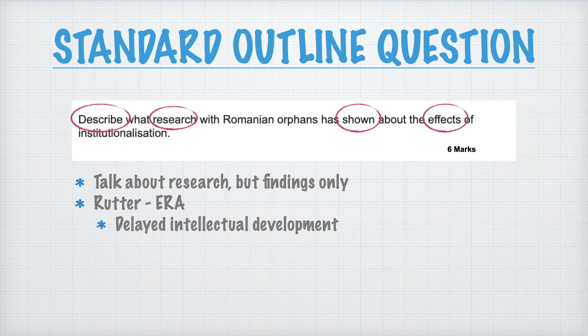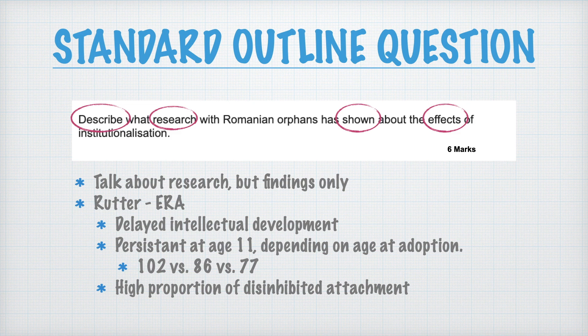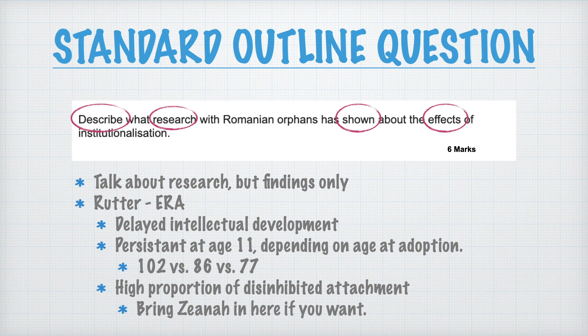There was delayed intellectual development which was persistent at age 11 depending on age at adoption. Those adopted before six months had a mean IQ of 102 versus those adopted after six months who had a mean IQ of 86, and those adopted after two years had a mean IQ of 77. There's an argument the effects could be reversed if adopted before six months. You also have a high proportion of disinhibited attachment — feel free to talk about associated behaviors and why they occur. You can even bring in Zena with the Bucharest Early Intervention Project.